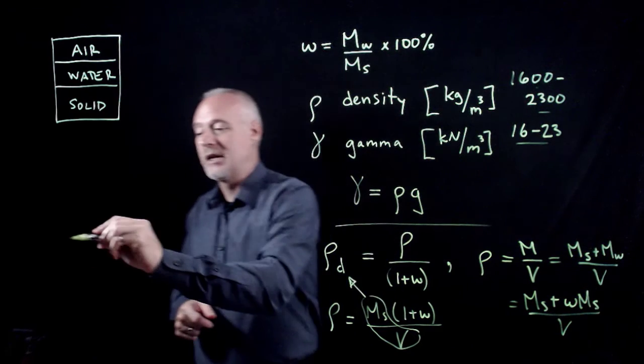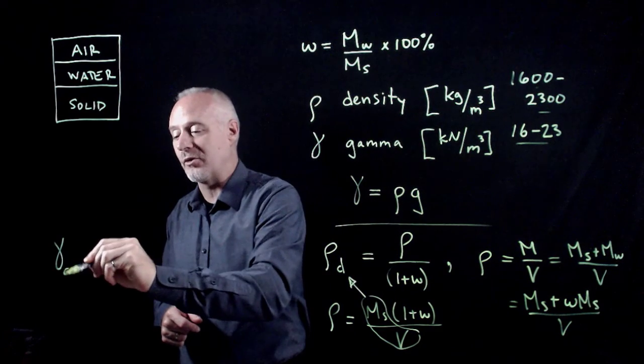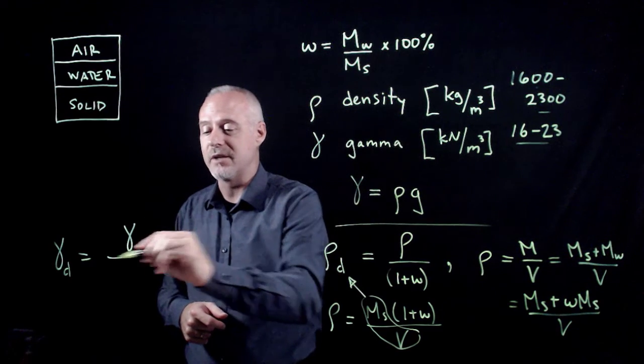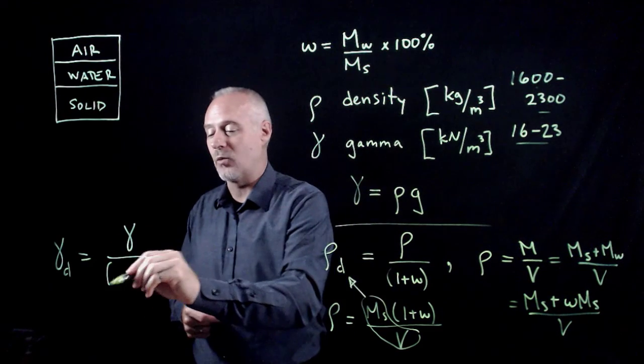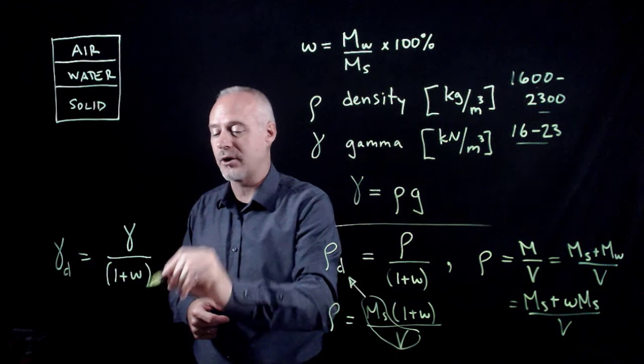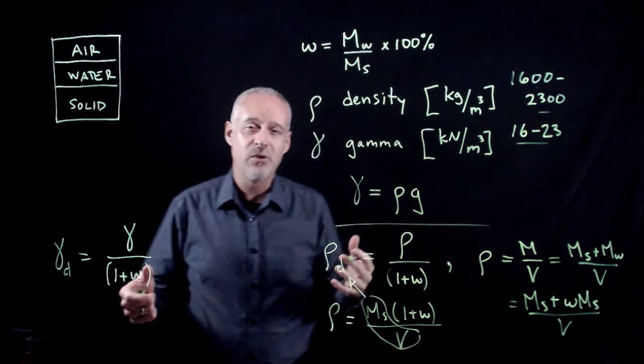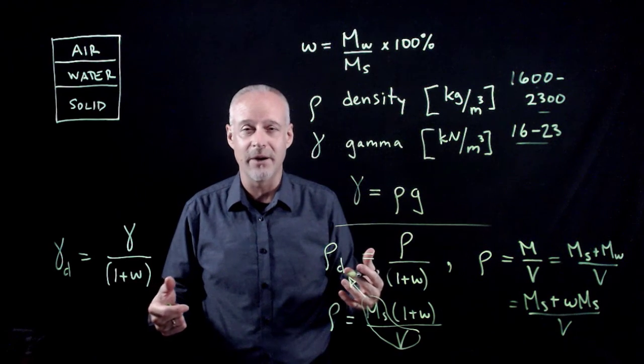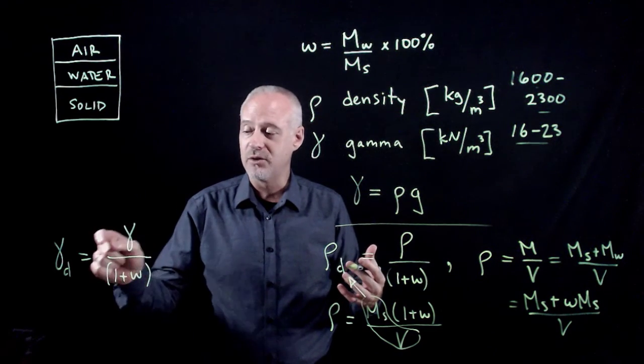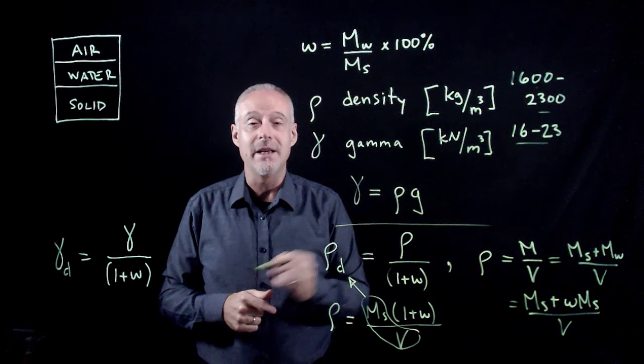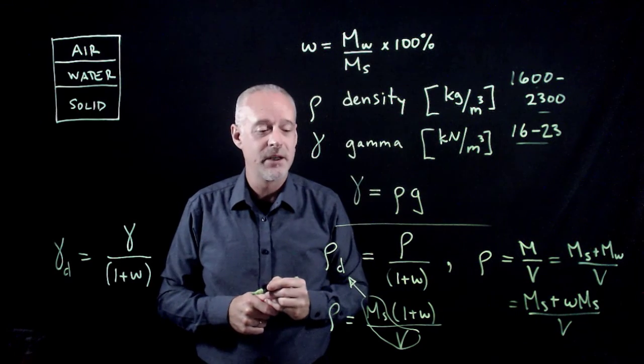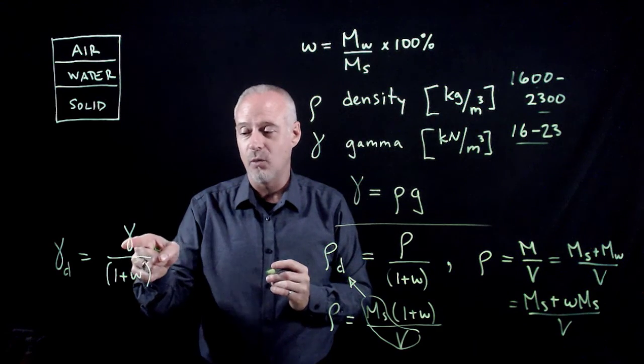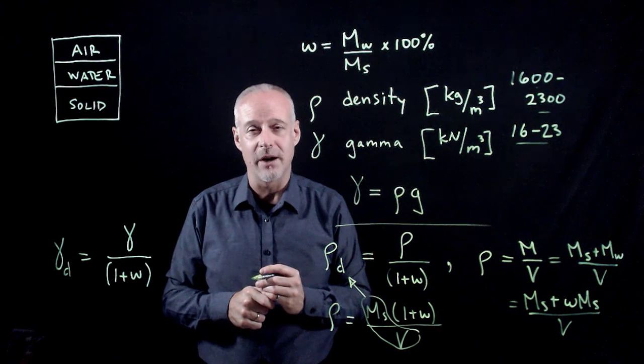I'll just point out that the formula for the dry unit weight takes exactly the same form, where it is the wet unit weight divided by 1 plus the water content. So if you're doing your geotechnical lab on compaction or any other lab for that matter, and you need to calculate dry unit weight or dry density, if you know the water content, then you can convert between the wet density or wet unit weight and the dry unit weight and dry density.